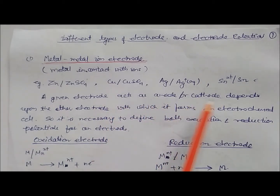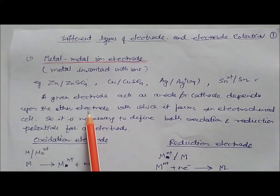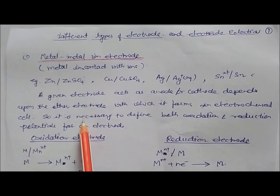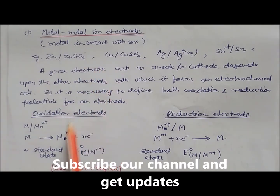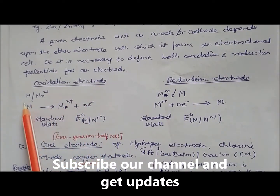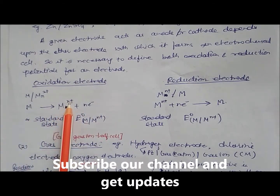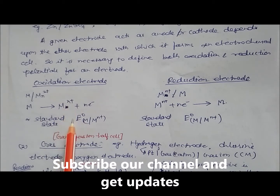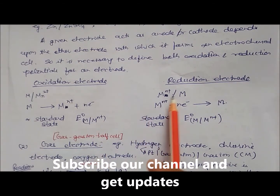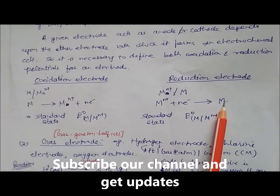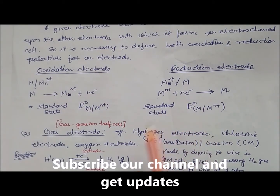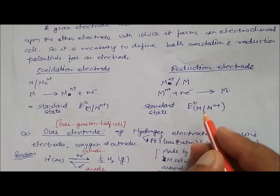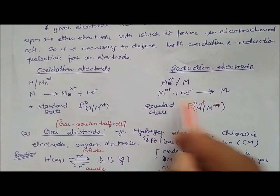A given electrode acting as an anode or cathode depends upon the other electrode with which it forms an electrochemical cell. So it is necessary to define both oxidation and reduction potential. If it is an oxidation electrode, we write M → M^n+ and in the standard state we write E° as M | M^n+. For the reduction electrode, M^n+ gains electrons to become M, and the standard state notation is M^n+ | M.